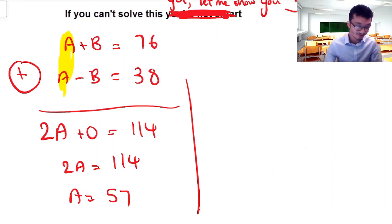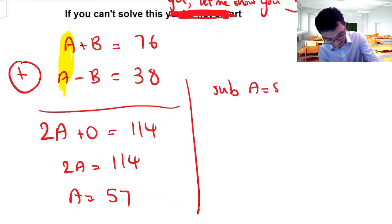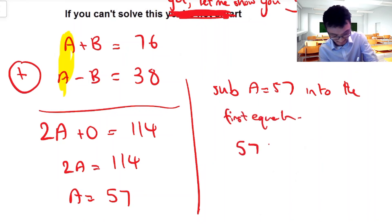After I've done that, once you've got one of them, to find the other, it's pretty... Once you've got one of them, to find the other, all you have to do is go back into the original equation and substitute it in. Now, you may be wondering, which equation do I choose? So I choose A plus B is equal to 76, or A minus B is equal to 38. It doesn't actually matter which one you choose. You can choose whichever one. You'll get the same answer. I'm going to choose the first one because I like addition. So I'm going to sub A equals to 57 into the first equation. And so that's going to be 57 plus B is equal to 76.